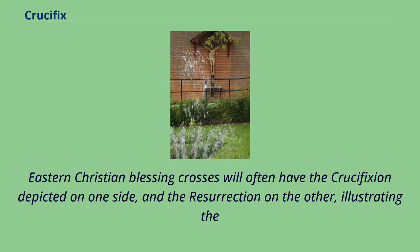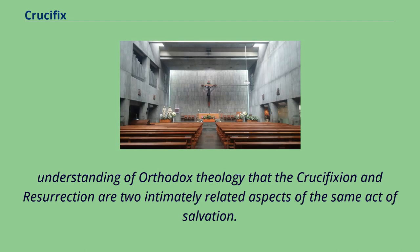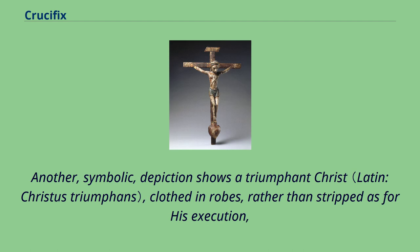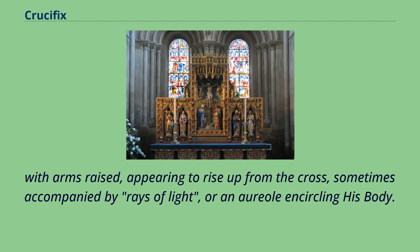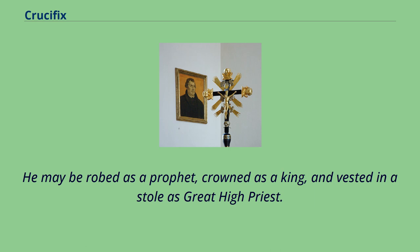Eastern Christian blessing crosses will often have the crucifixion depicted on one side and the resurrection on the other, illustrating the understanding of Orthodox theology that the crucifixion and resurrection are two intimately related aspects of the same act of salvation. Another symbolic depiction shows a triumphant Christ, clothed in robes rather than stripped as for his execution, with arms raised, appearing to rise up from the cross, sometimes accompanied by rays of light or an aureole encircling his body. He may be robed as a prophet, crowned as a king, and vested in a stole as great high priest.